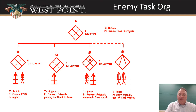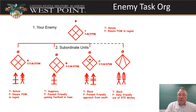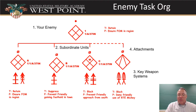The enemy task org looks similar. Show only your enemy — not the entire company's enemy or another platoon's enemy. Break it down one level: if your enemy is a squad, show the fire teams. Show an icon for each key weapon system — if they have two missile systems, show two icons. Make sure you get the right attachments by reading closely; understand which attachments belong to your enemy versus a different objective. Include a task and purpose at least at the squad level.